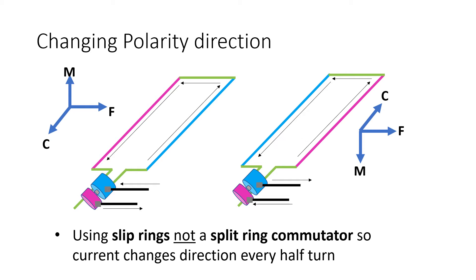Previously at the pink slip ring the current was flowing away and out — it's now flowing into the pink slip ring. The reverse is also true with the blue, where previously the current was flowing into the blue side of the coil, it's now flowing out. Every half turn, when you get to that vertical point, you will flip the direction of the current.